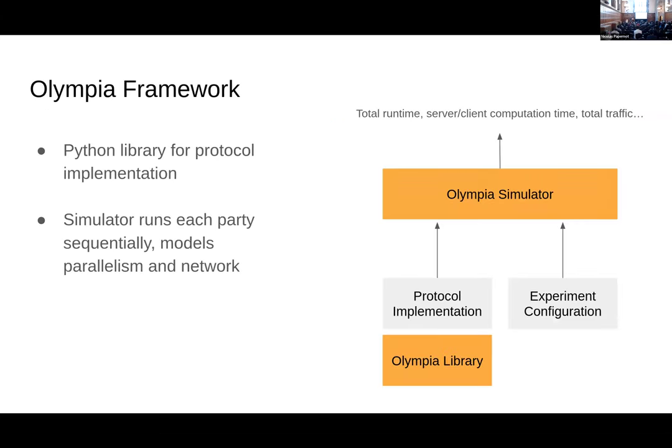The Olympia framework has two pieces highlighted on the right-hand side. It has a library — a Python library that helps you write protocols — and it has a simulator that allows you to do experiments on those protocols. The gray boxes represent protocol implementation and experiment configuration. If you're designing a new protocol, you write those pieces, and the framework pieces help you do it, while the simulator allows you to run the experiment.